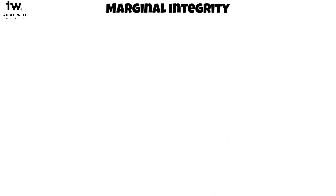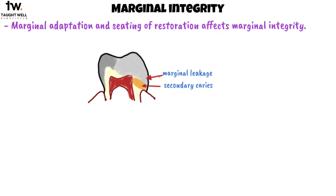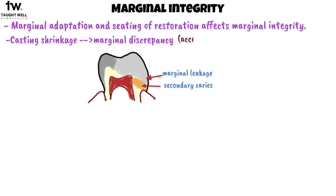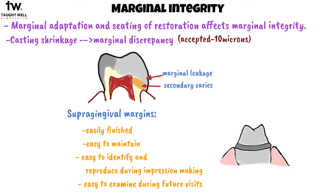The next principle is marginal integrity. Marginal adaptation and seating of the restoration affects marginal integrity. Poor marginal adaptation leads to marginal leakage and secondary caries. Casting shrinkage may lead to marginal discrepancy. The most accepted discrepancy is around 10 microns. The margin should be placed supra-gingivally because it is easily finished, easy to maintain, easy to identify and reproduced during impression making, and also easy to examine during future visits.